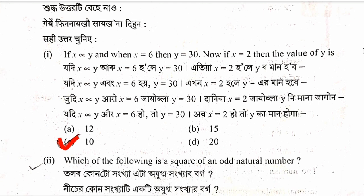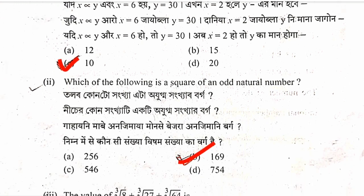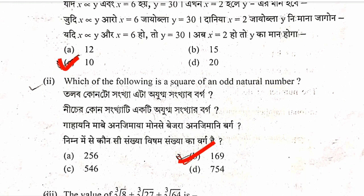When x is 6, y is 30. Using proportion: when x is 2, since x and y are proportional, the answer will be 10. Option C is correct.